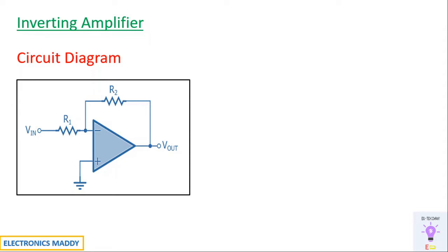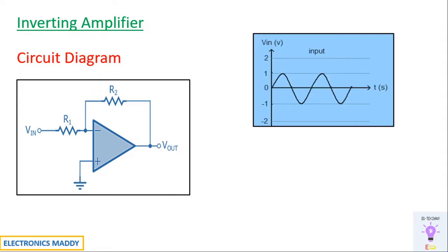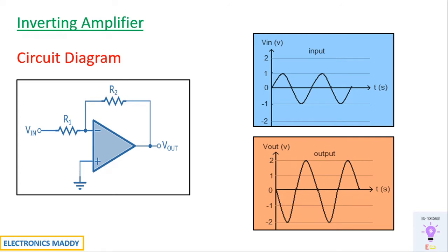So what is an inverting amplifier? An inverting amplifier is basically a circuit that is used to produce a phase shift of 180 degrees with respect to the input. When we have a sinusoidal signal, the output will have a phase shift of about 180 degrees with respect to the input. Two important things to observe: the output voltage is amplified, and the phase shift between the input and output signal is 180 degrees.